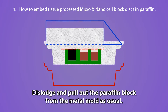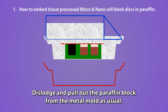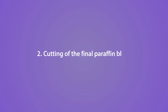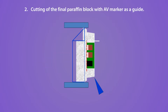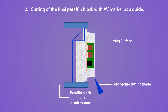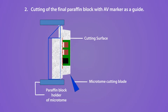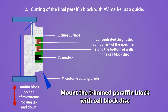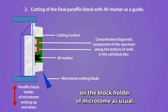Dislodge and pull out the paraffin block from the metal mold as usual. Use the AV marker as a guide for cutting the final paraffin block, then mount the trimmed paraffin block with the Cell Block Disc on the block holder of the microtome as usual.